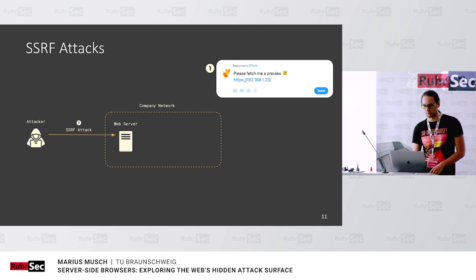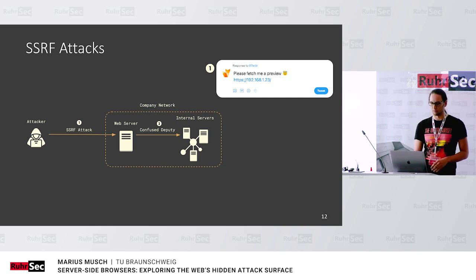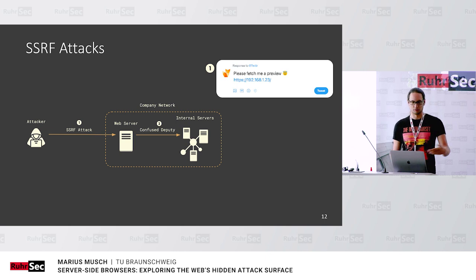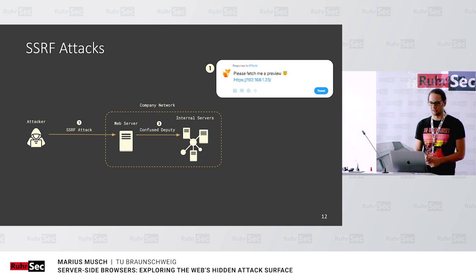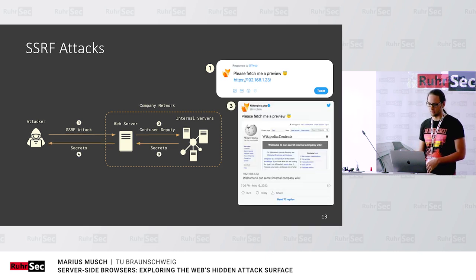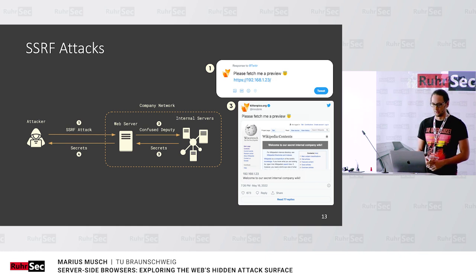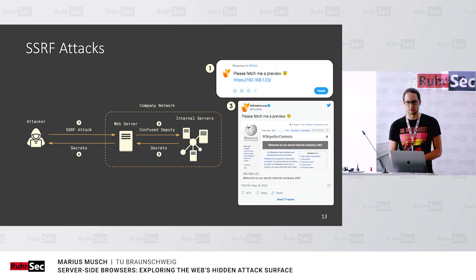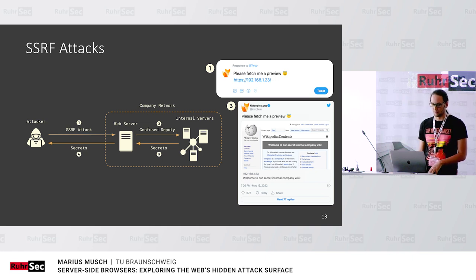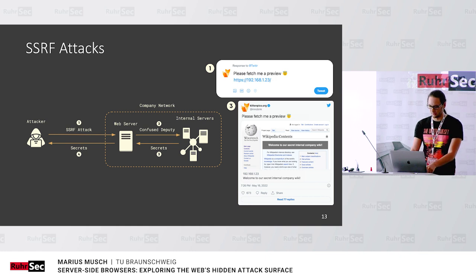In the SSRF case, the user would post something like a link to an internal IP address. The web server doing the link previews acts as a confused deputy — it's configured to fetch all URLs and doesn't care if it's an internal IP. Unless you have countermeasures in place, it would just make the request. If there are other servers in the network, the attacker could try lots of IPs and eventually get a preview from an internal corporate wiki where there are secrets. This attack has many variants — you could exfiltrate local files, abuse the server as an attack proxy, and so on.